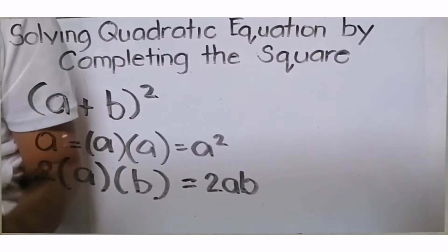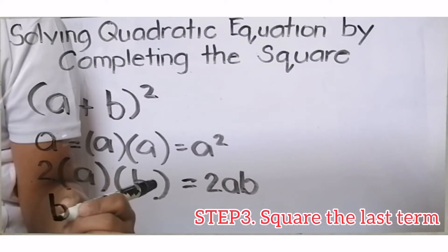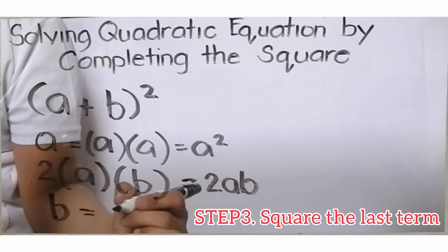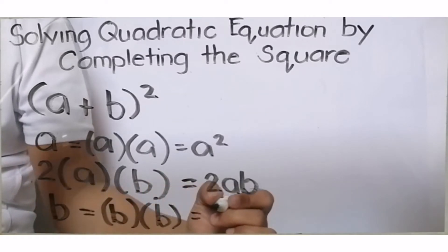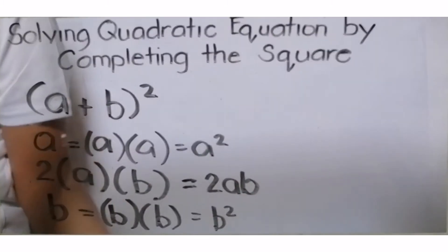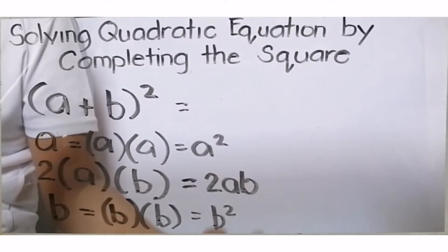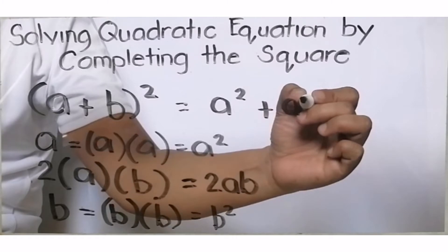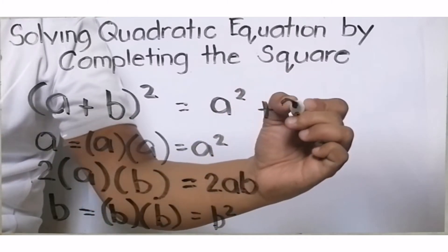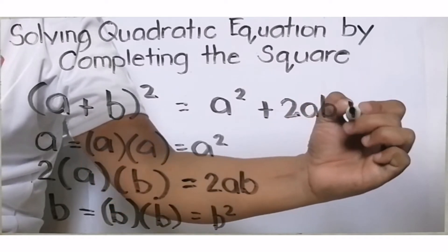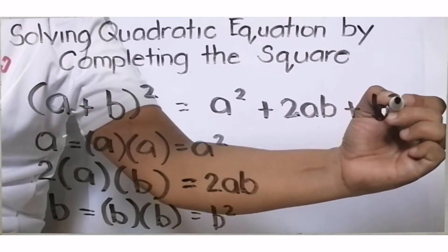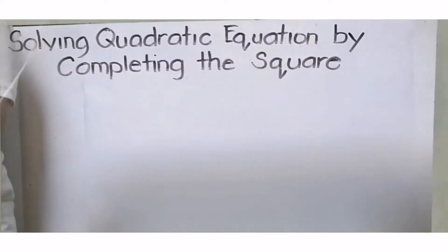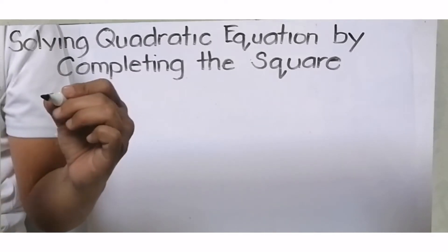The last step is to square the last term, which is B. When we square B, we multiply B times B, so this is B squared. When we write it as a one-line equation, it equals A squared plus 2AB plus B squared. Let's make an example for squaring a binomial.